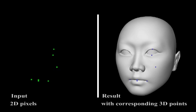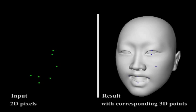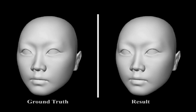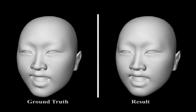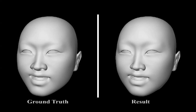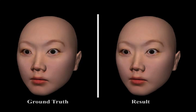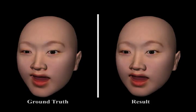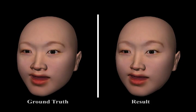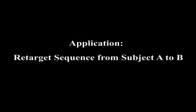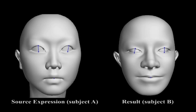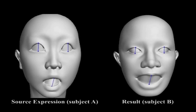We take the trajectories of points in screen space as input and create the motion on the right. Here is a comparison between the ground truth data and the synthesized result. We retarget an animation sequence from one character to another character.